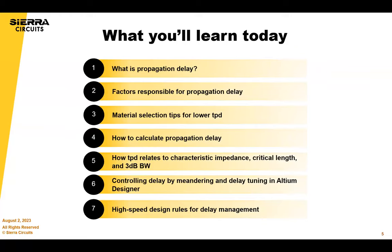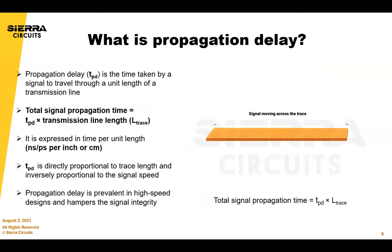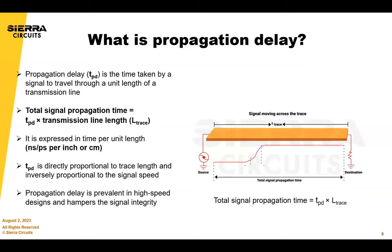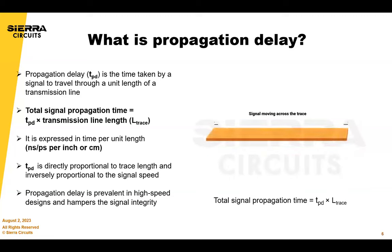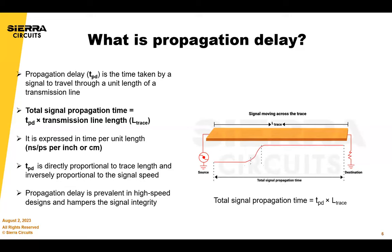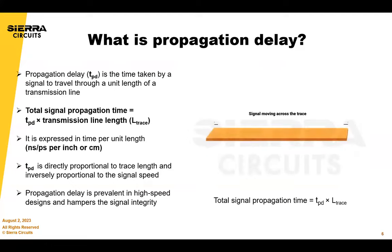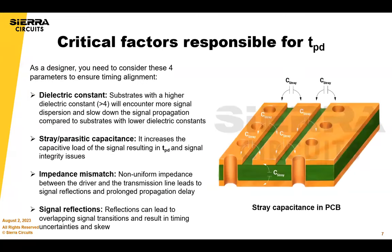This is what we're going to cover today in our webinar — to make sure that you guys can minimize your signal integrity issues and get designs and systems that work right the first time. First, the basics: the definition. Propagation delay is the time taken by a signal to propagate over a unit length of the transmission line. You can estimate the total signal propagation time by multiplying the propagation delay by the transmission line length. Propagation delay is expressed in time per unit length — nanoseconds or picoseconds per inch — and is directly proportional to trace length and inversely proportional to signal speed. It can cause data disruption in the system and impacts overall signal integrity.